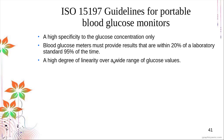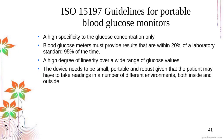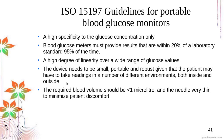The third requirement is a high degree of linearity over a wide range of glucose values, because measurement is made through calibration and fitting over a curve. Good linearity is needed for proper calculation of the measurement signal versus the calibrated measurement. The device also needs to be small, portable, and robust, as patients may take readings in many different environments. The required blood volume should be less than 1 microliter and the needle very thin.